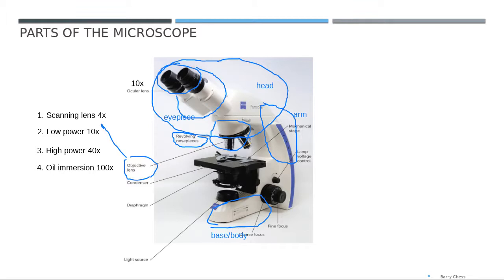Another part of the microscope is this flat surface, which is called the stage. The stage is the place where we put the slide and the object.